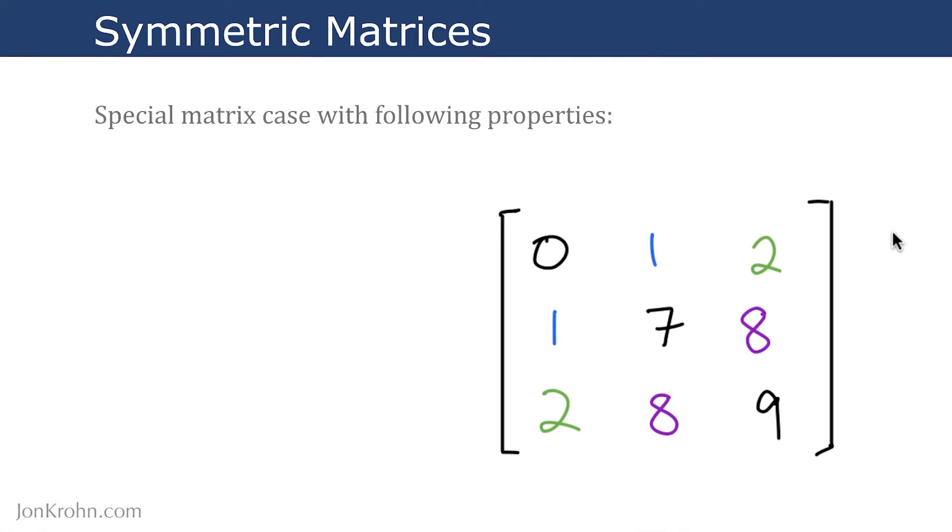A symmetric matrix is a special matrix case with the following properties. First, it has to be square, so it has as many rows as it has columns. I've got an example of a symmetric matrix right here with three rows and three columns.